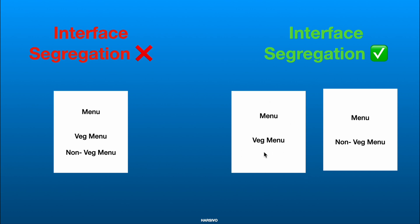A separate menu would be really good for the vegetarian person because they can simply look into the menu and decide which item they want. In the same way, the non-vegetarian person will have a separate menu for non-veg items and can easily go through all the items to select what they want to order. So the cluttered menu breaks our Interface Segregation Principle, whereas the two separate menus comply with it.